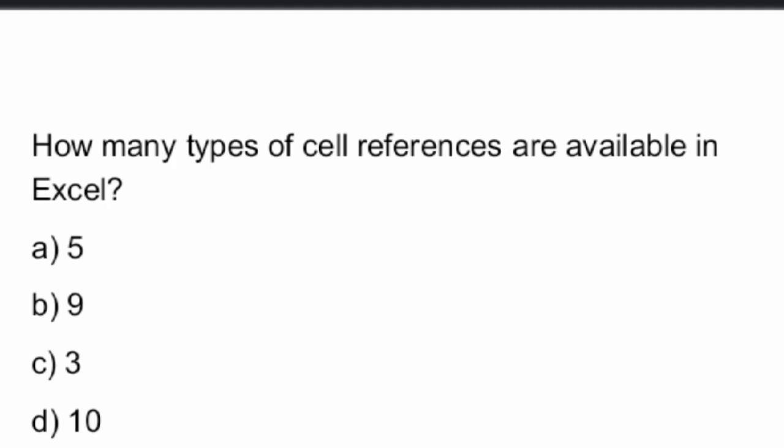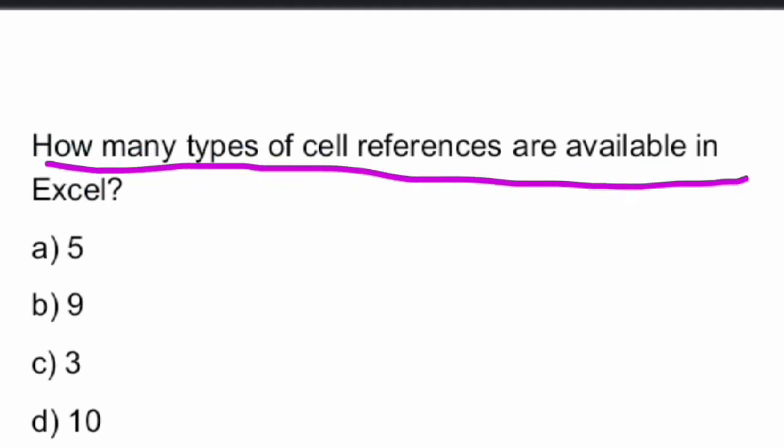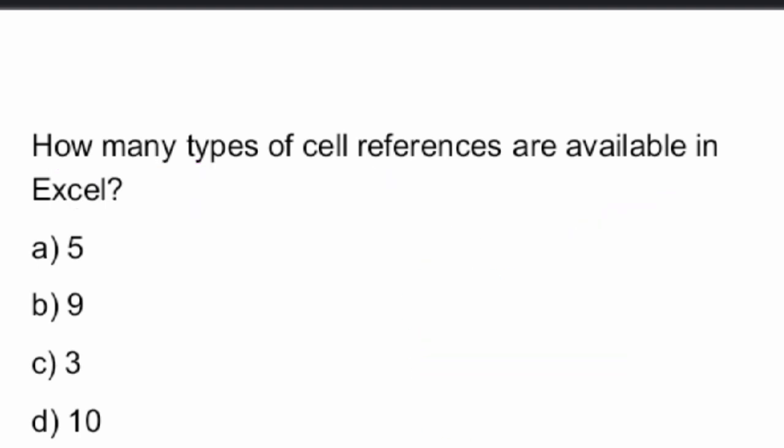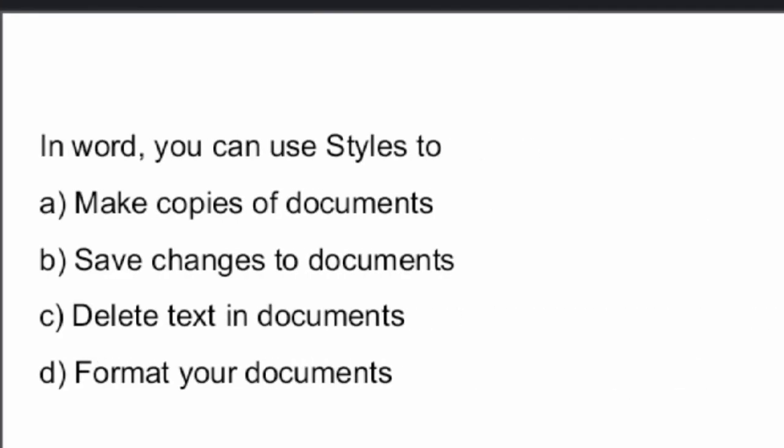Next question: How many types of cell references are available in MS Excel? The answer is Option A — there are 5 types of cell references in MS Excel.